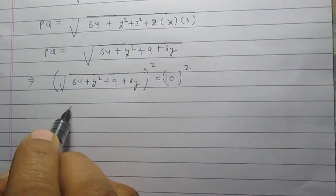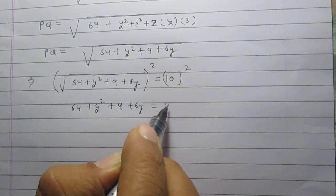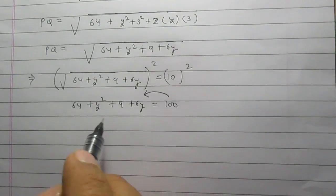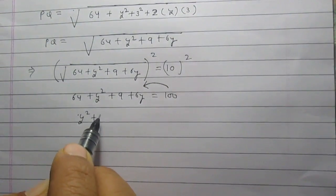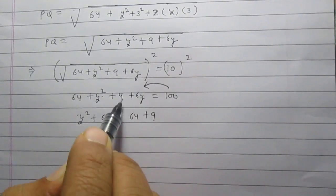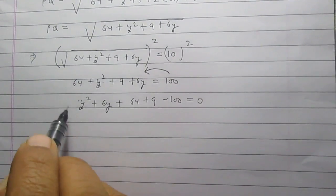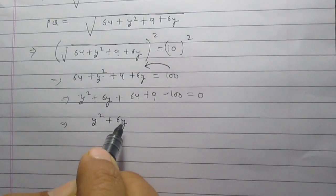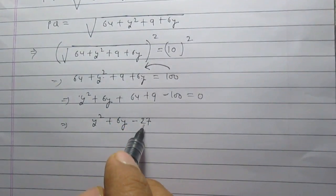Squaring both sides gives us 64 + y² + 9 + 6y = 100. Transferring 100 to the left-hand side and rearranging the terms, we get y² + 6y + 64 + 9 - 100 = 0, which simplifies to y² + 6y - 27 = 0.